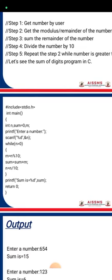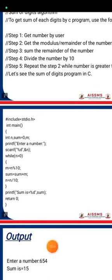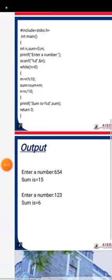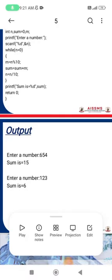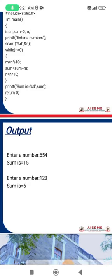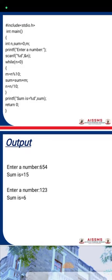The output will be like this: enter a number 654, so sum is 6 plus 5 plus 4, that is 15. Another example, enter a number 123, so 1 plus 2 plus 3 is 6.